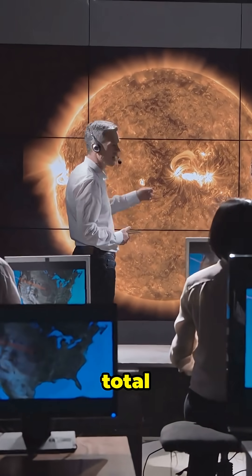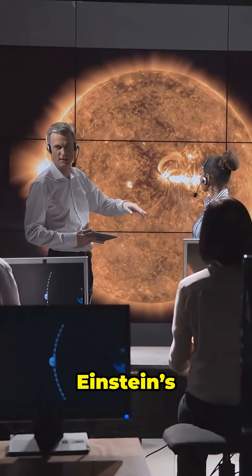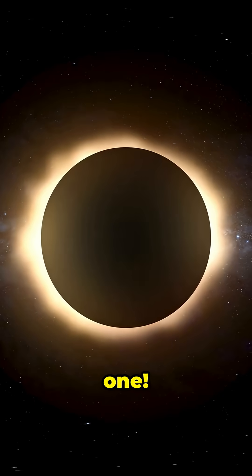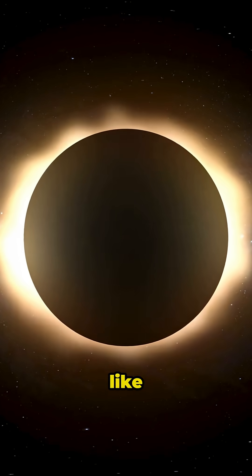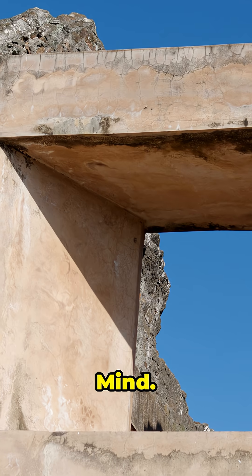In 1919, a total solar eclipse helped prove Einstein's theory of relativity. Yeah, the space bends won. Scientists saw starlight curve around the sun, just like Einstein predicted. Mind blown.